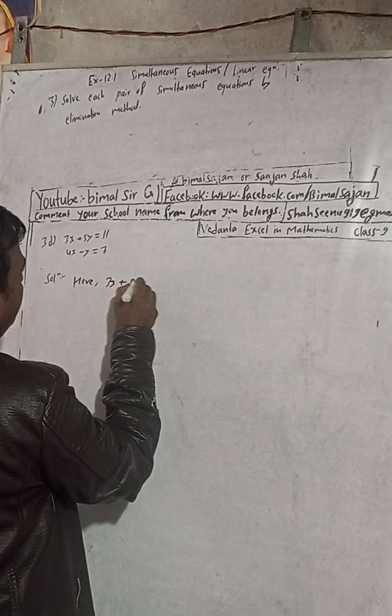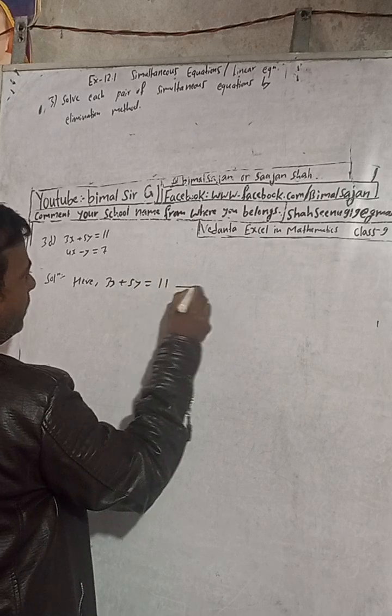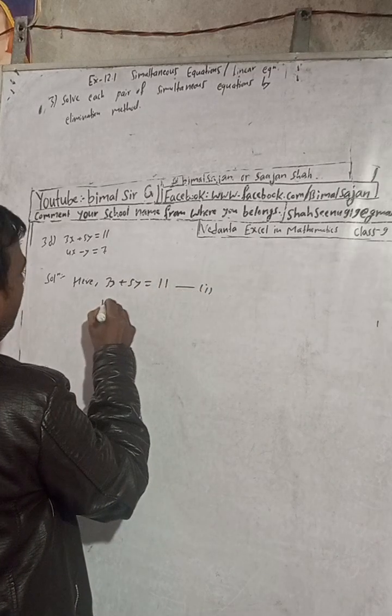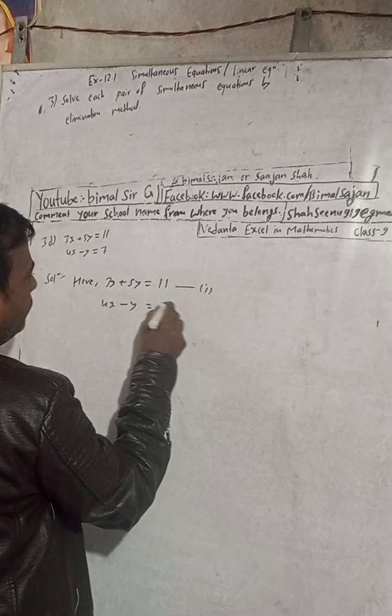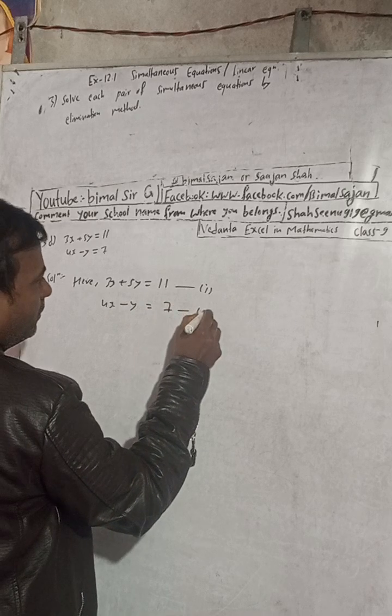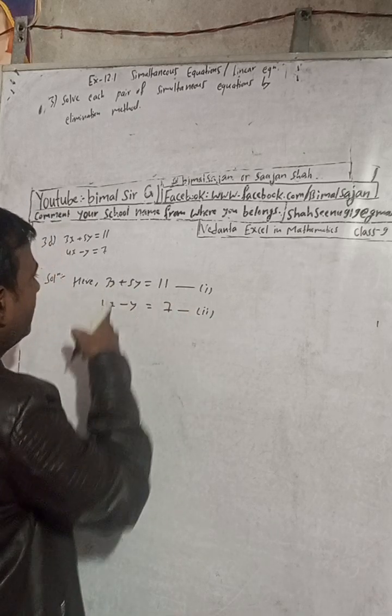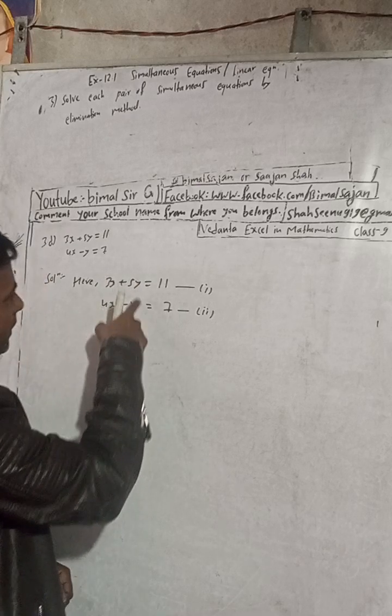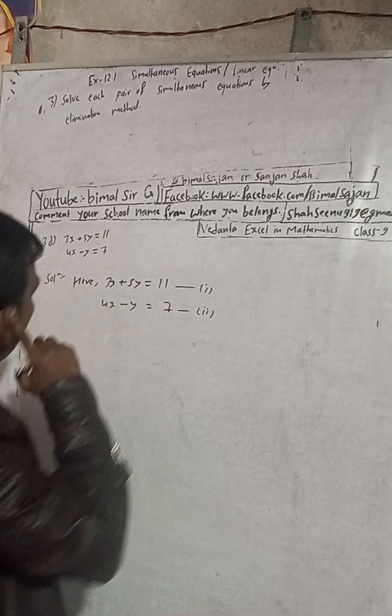Here 3x plus 5y is equal to 11, equation 1, and 4x minus y is equal to 7, equation 2. Here the coefficients of x are different, and y are different, so what we have to do? We have to make the same coefficient to eliminate.